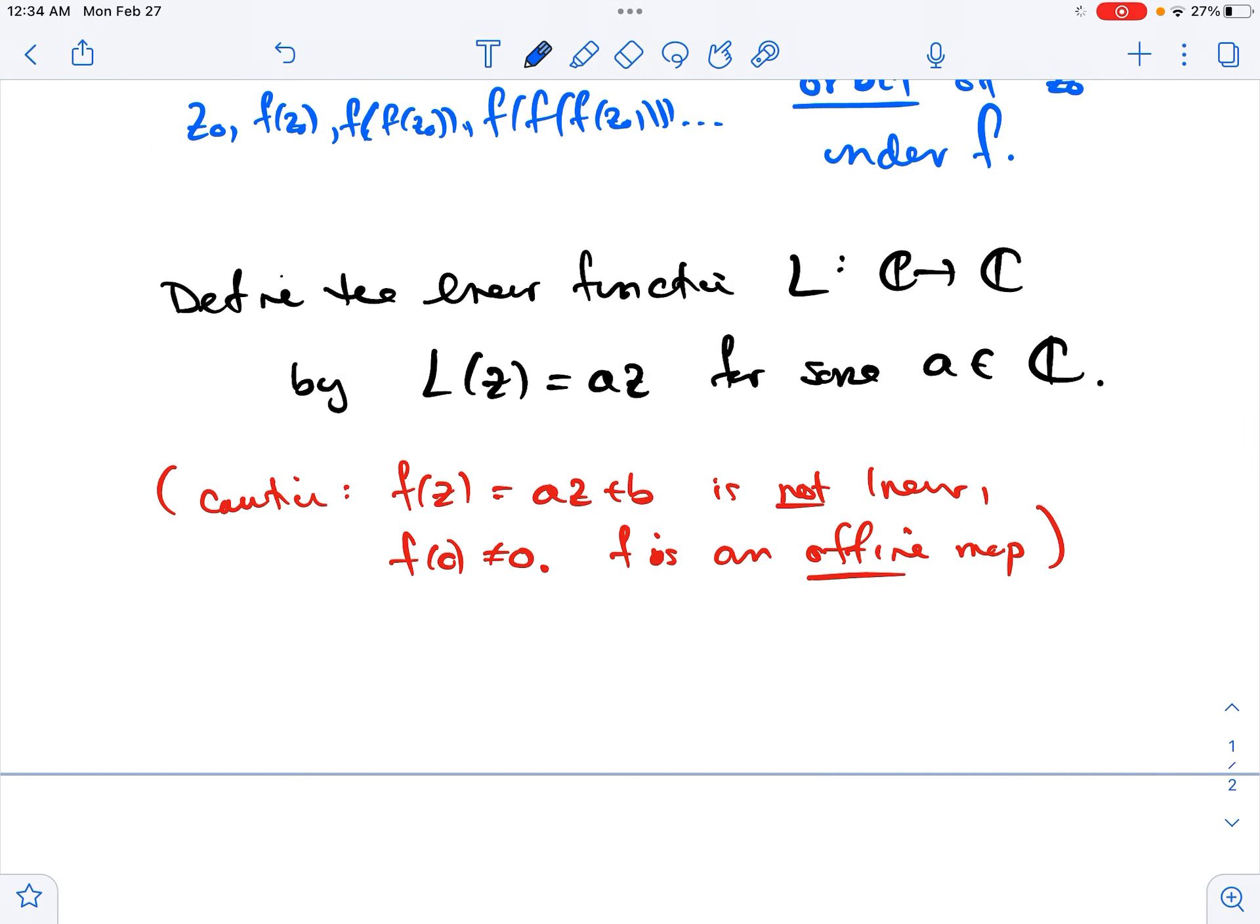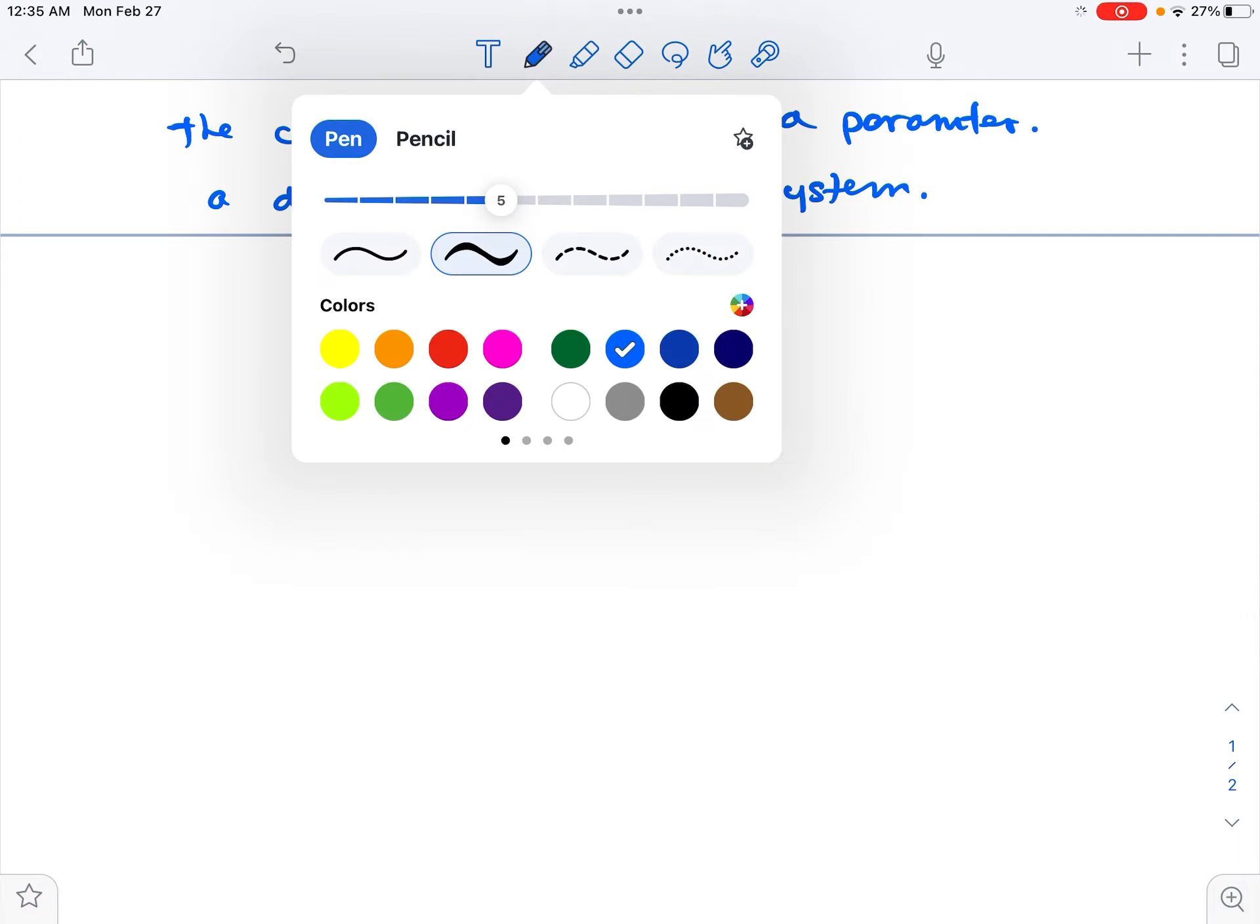We have a name for the number a. The constant a is called a parameter. And we can think about it as sort of a dial or control for the behavior of the orbit of our initial point. So a describes a particular system or evolution. The orbits will change as I choose different values of a.